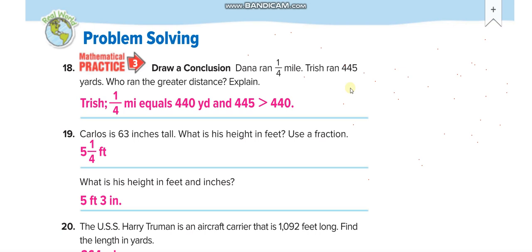Hello everyone, this is the part 2 video of lesson 2, chapter 11. Here we're doing: Tan ran 1/4 mile and Trish ran 445 yards. We know that in one mile we have 1760 yards.